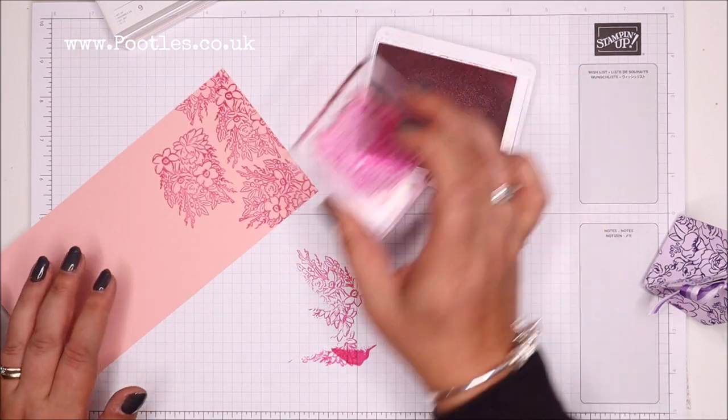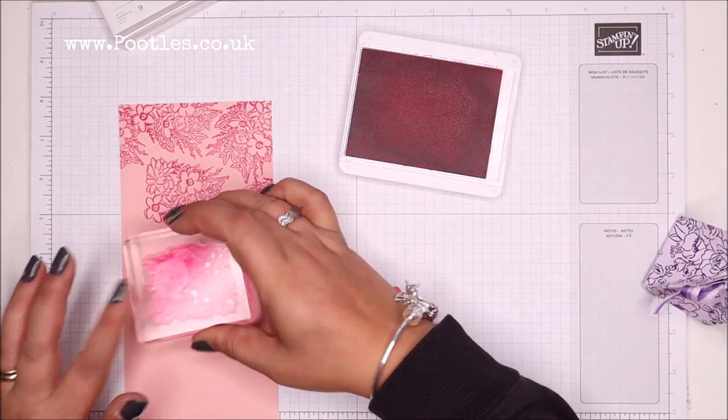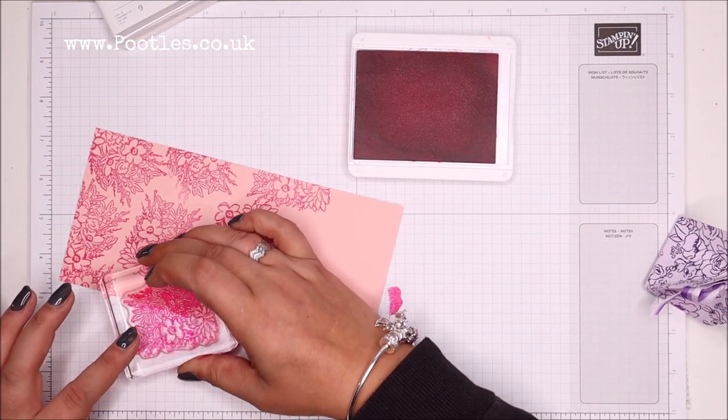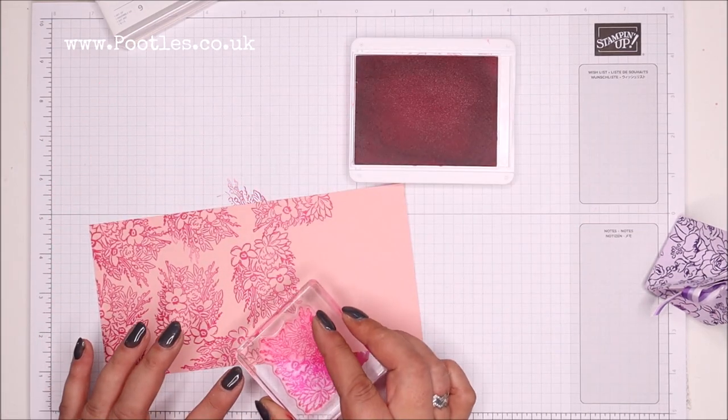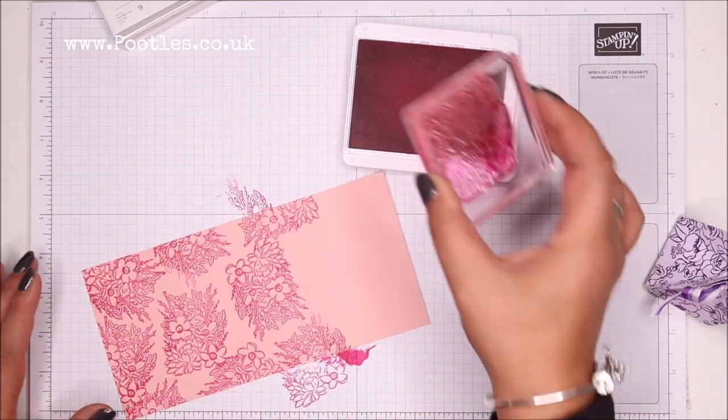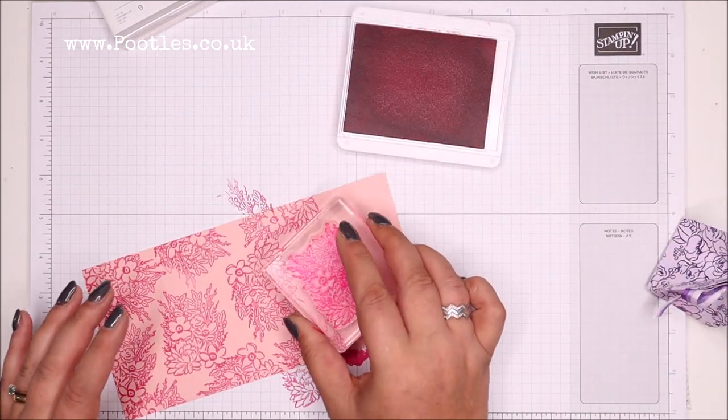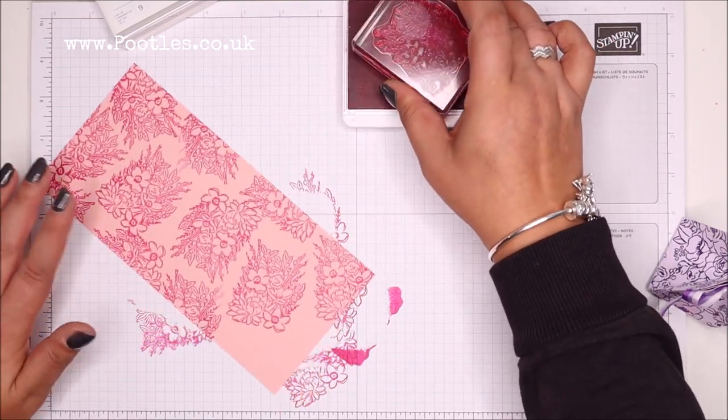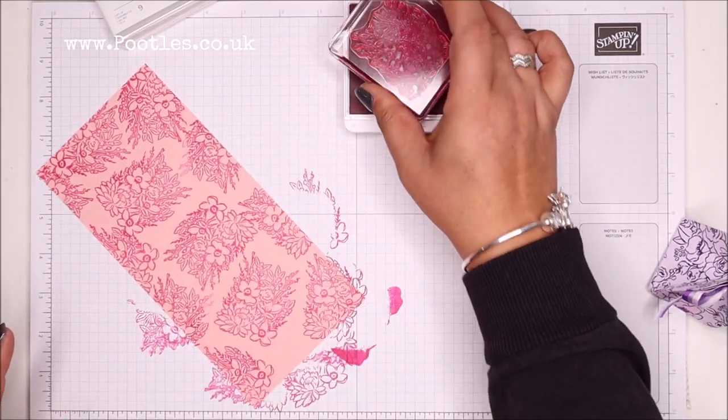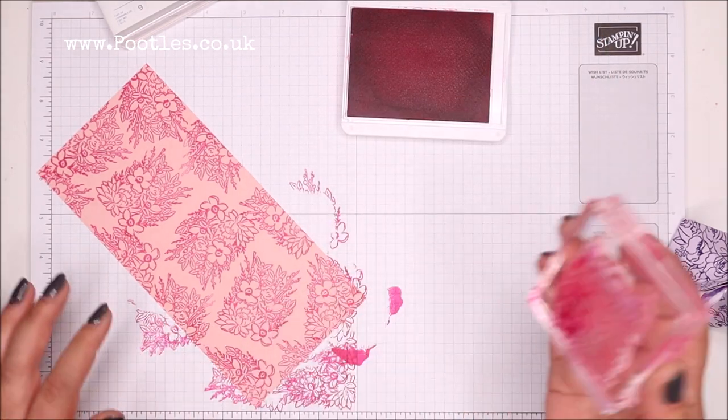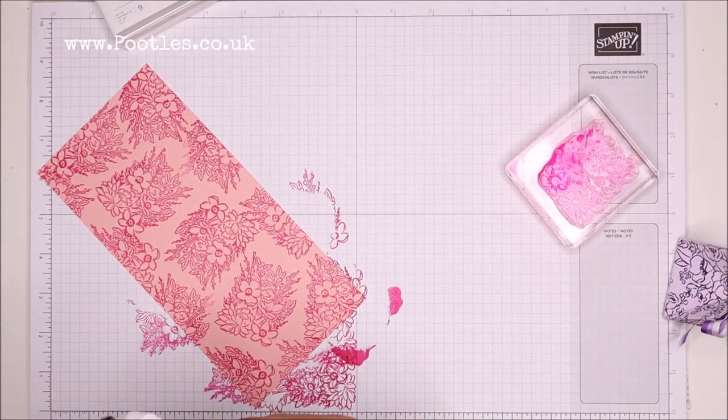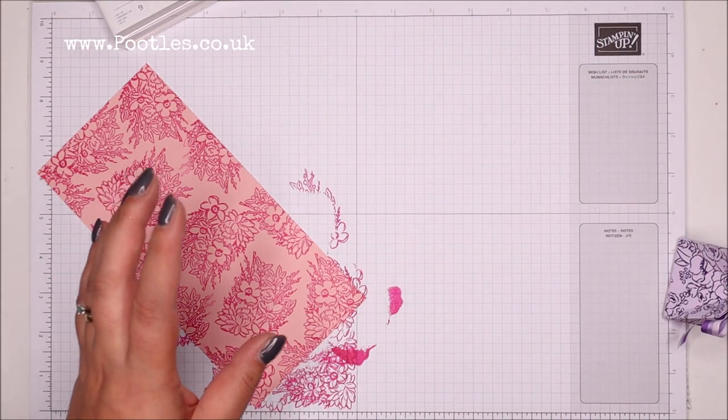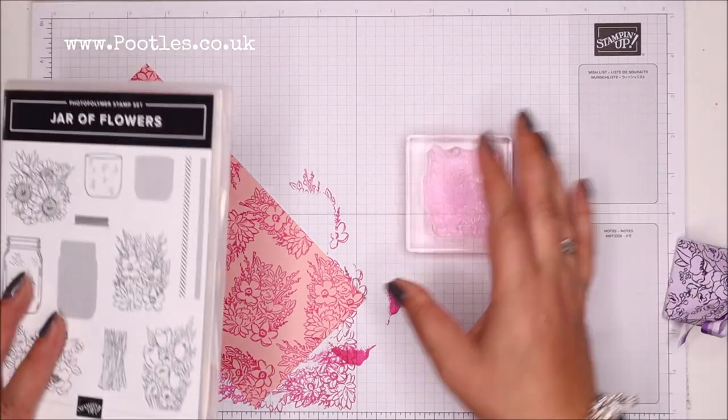Yeah, randomly stamping all over. I'm not too fussed whether my flowers are going to be the right way up or not the right way up. Because that would be the wrong way up. But I'm just stamping all over. There we go. Right. I can't believe I did that.